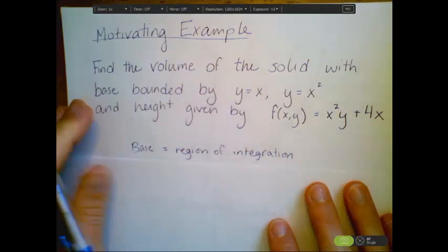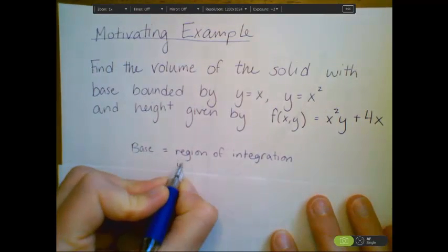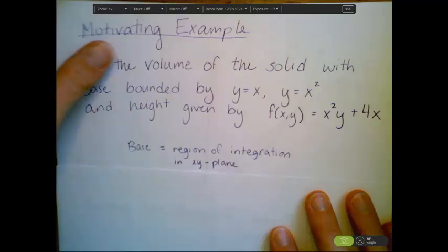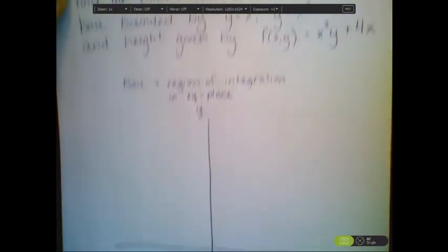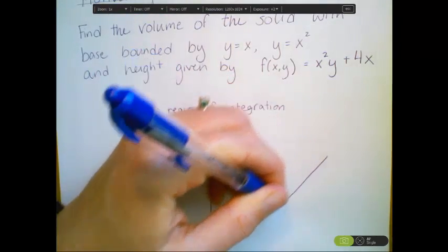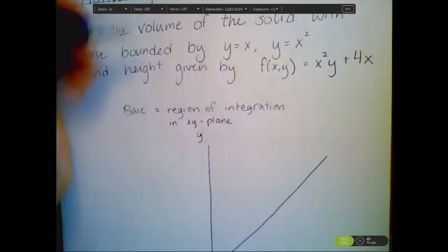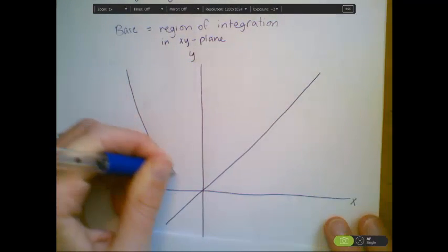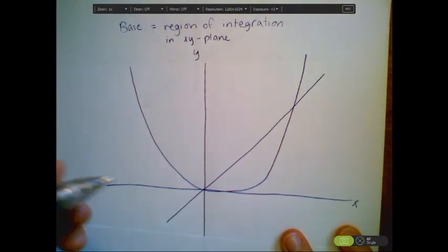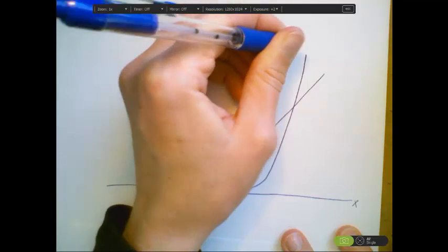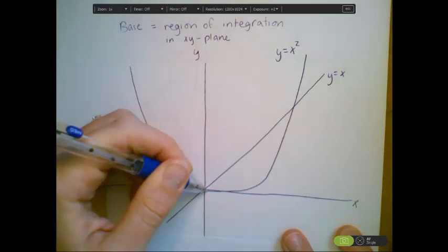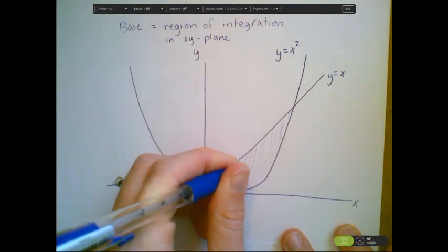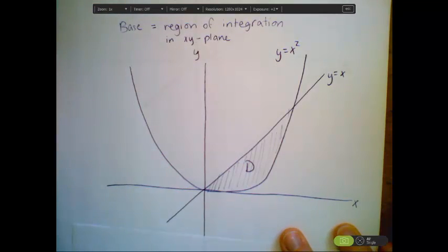The base is always going to be in a fixed plane — we usually think of the xy plane as the bottom. Let's draw a picture. Our bounds are y equals x, which is a straight line, and y equals x squared, which is the basic parabola. I'll label the straight line y equals x and the parabola y equals x squared. This region bounded by these two curves is our base of integration, and I'll label it region d for the domain — that's standard notation.